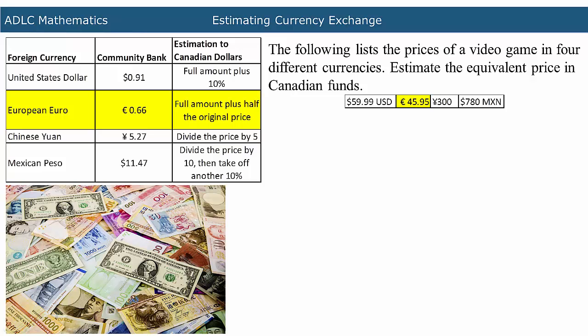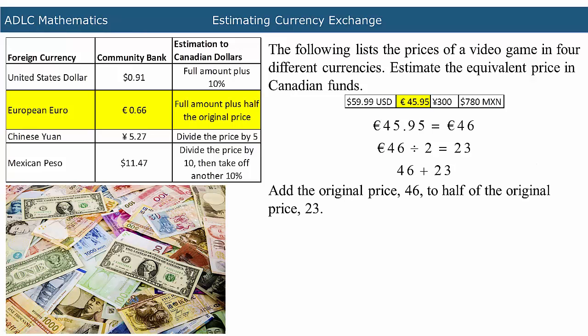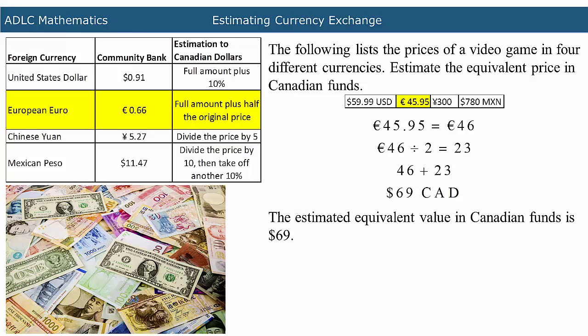Next, the price in European euro will be converted to Canadian dollars. The European euro price is 45 euros and 95 cents, which is equal to about 46 euros. To calculate half of the cost, divide the original price, 46 euros, by 2, which results in an answer of 23. Now, add the original price, 46, to half of the original price, 23. The estimated equivalent value in Canadian funds is $69.